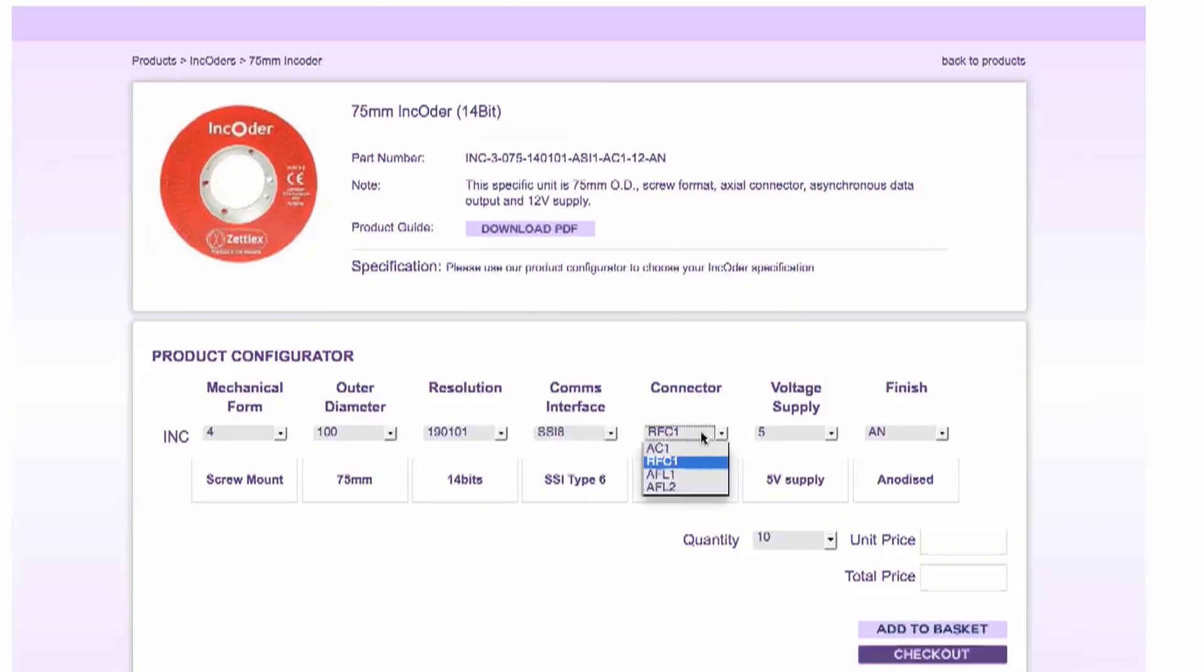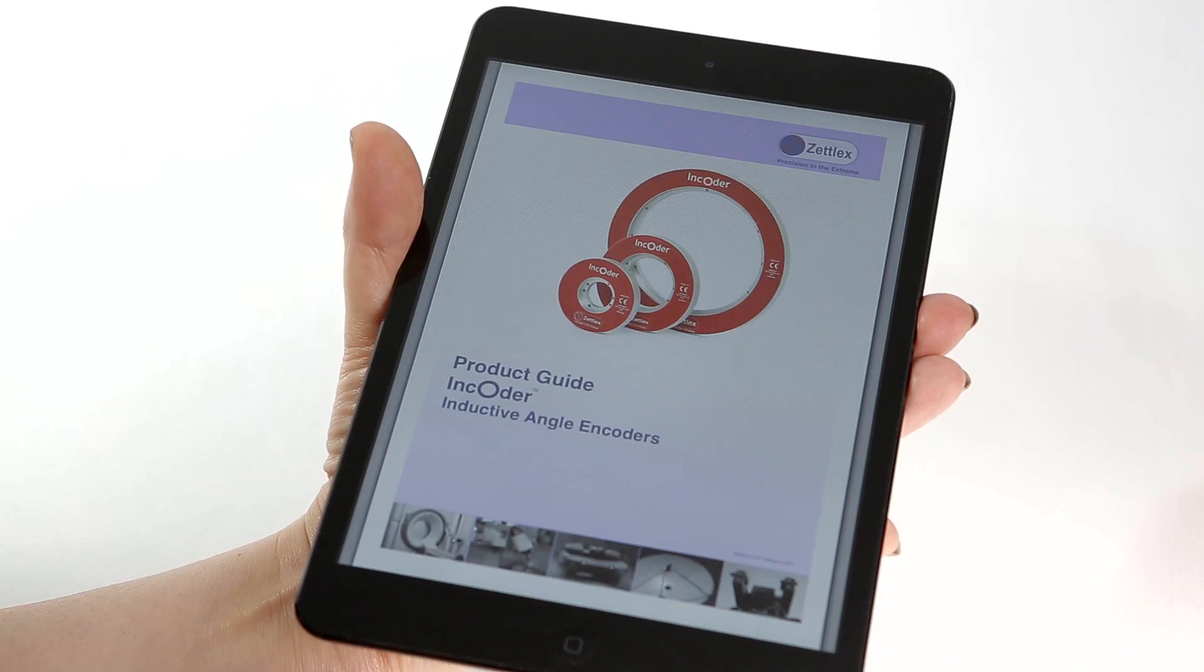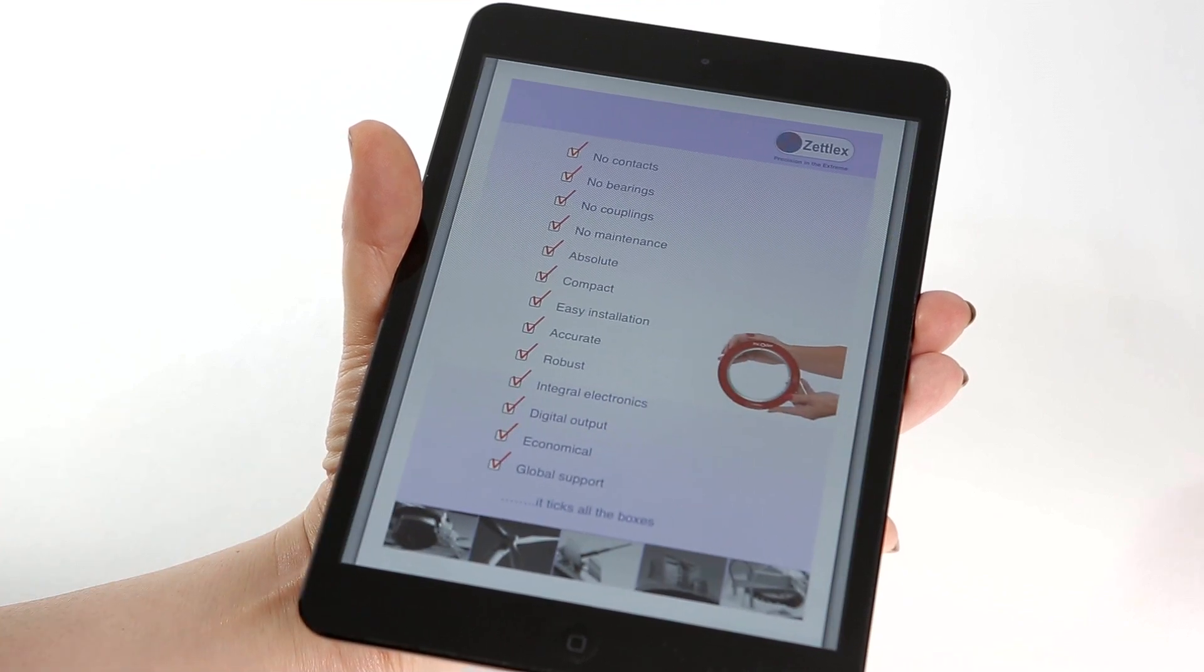It's easy to use. Simply select the options and build up the encoder part number. All the technical detail can be found in the encoder product guide.